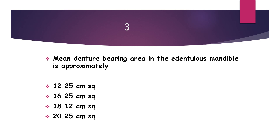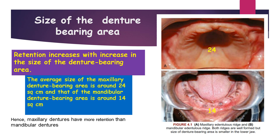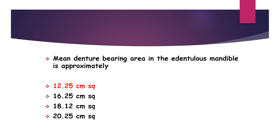The next question: what is the mean denture bearing area in the edentulous mandible? Options are 12.25 cm², 16.25 cm², 18.12 cm², and 20.25 cm². According to the 12th edition of Boucher, the average maxillary denture bearing area is about 24 cm² and the mandibular is about 14 cm². According to the 10th edition of Boucher the answer is 12.25 cm², so the answer depends on the edition referenced.